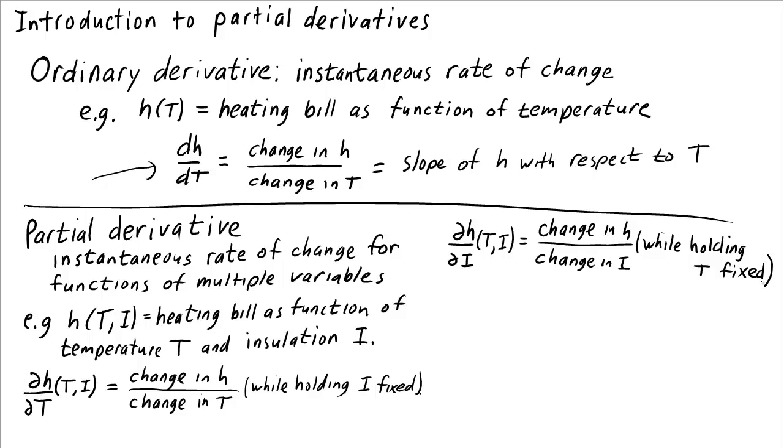To calculate this partial derivative, however, I need to keep the temperature fixed. I need to decide at what temperature am I going to make this calculation. Of course, this partial derivative will depend on temperature. If it's really cold outside, then I imagine I'll save a lot of money by adding insulation. But if the temperature is pretty warm, I might not gain very much.